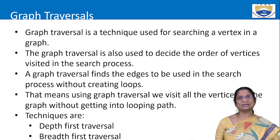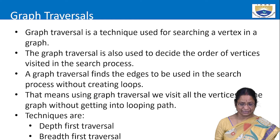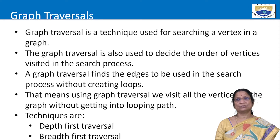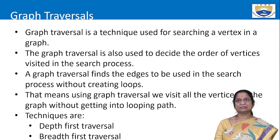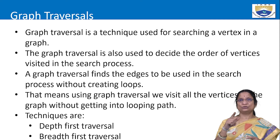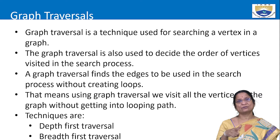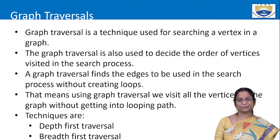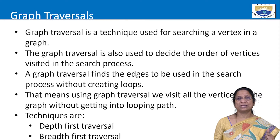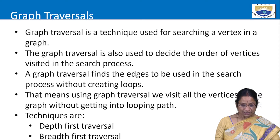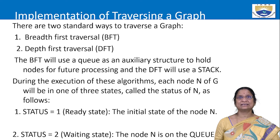When considering traversal, we must track whether each vertex has been visited or not. Graph traversal finds edges to use in the search process without creating any loops — when traversing, we must ensure no cycle is formed. If a cycle forms, the same elements will be traversed again and again. There are two standard graph traversal techniques: breadth-first traversal (BFT) and depth-first traversal (DFT).